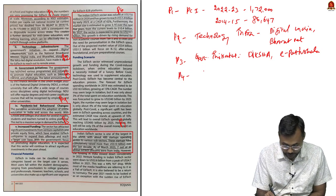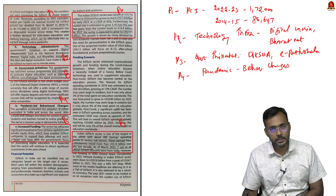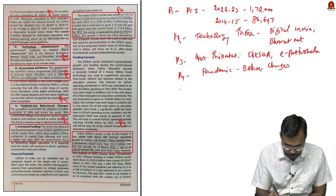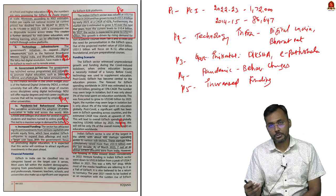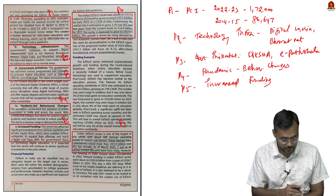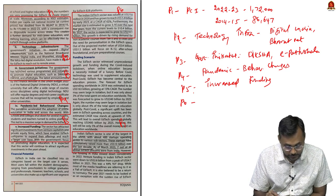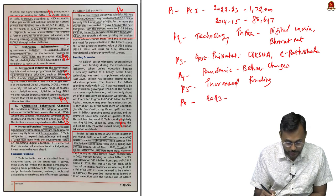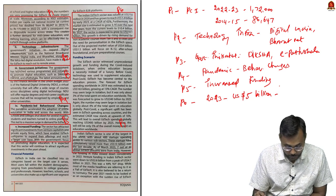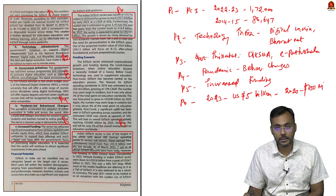Paragraph 4 discusses pandemic-related behavior: due to the pandemic, education began to transform from offline to online, which had a positive impact on the ed-tech sector. Paragraph 5 discusses increased funding: a lot of money is flowing into this sector because of the opportunities available.